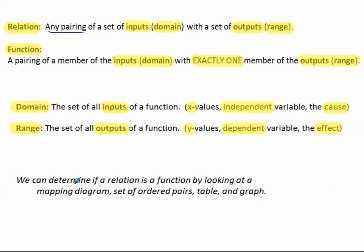We can determine if a relation is a function by looking at a mapping diagram, a set of ordered pairs, a table, and a graph.